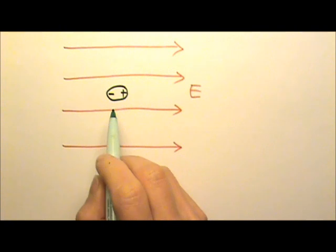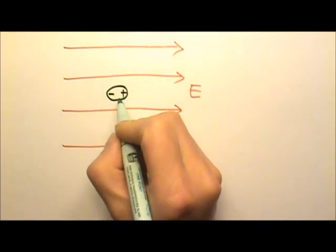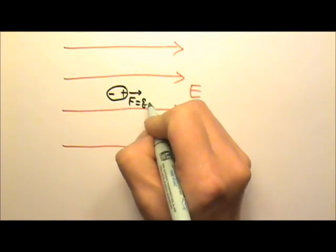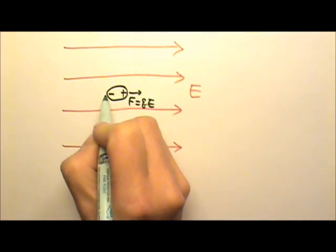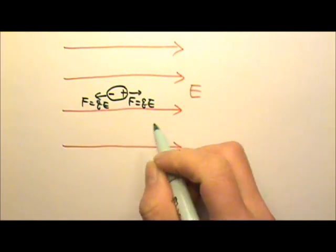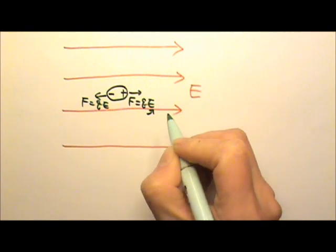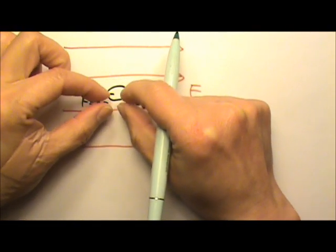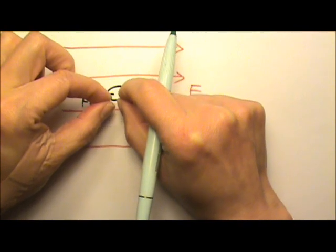So now we have a polarized air molecule. And this positive charge would experience an electric force F equals to QE to the right. The negative charge would experience a force F equals to QE to the left. And the stronger the electric field, the stronger the pulling force. So when the electric field gets strong enough, this molecule gets pulled apart.